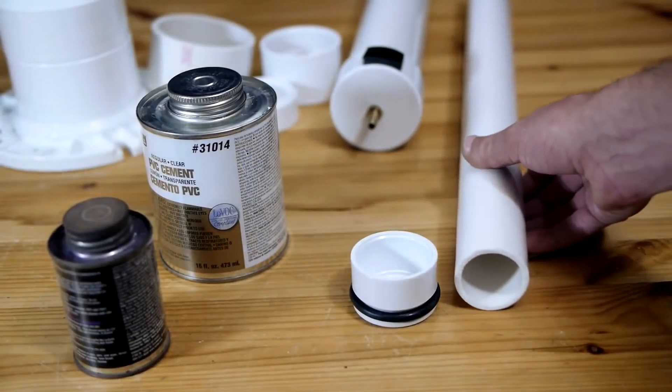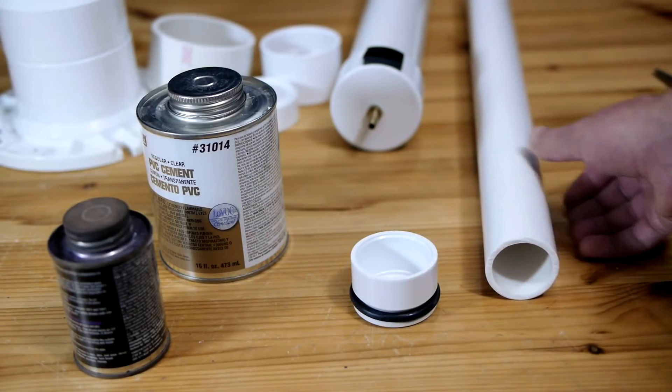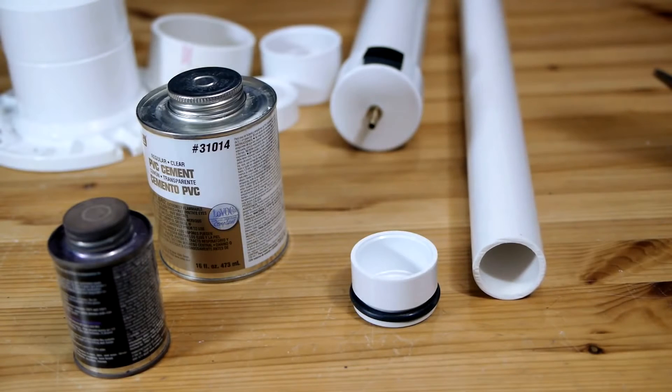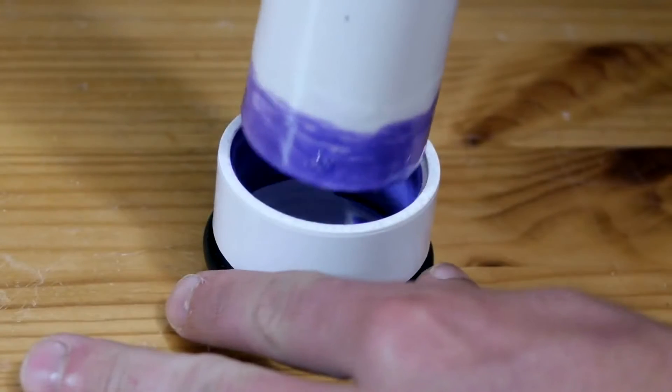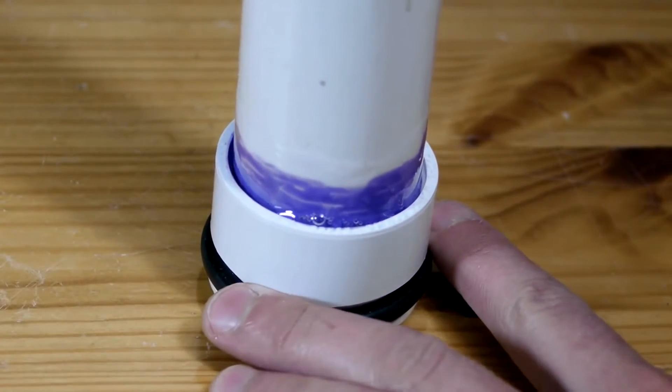Once the O-ring has been snapped into the groove, the piston is complete and it can be mounted to the pump shaft, which is a 20-inch length of inch and a quarter PVC pipe. More primer and cement will get the job done nicely.